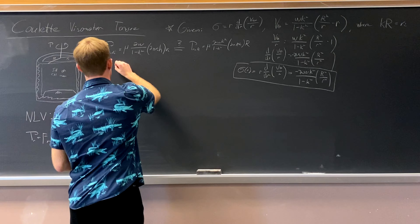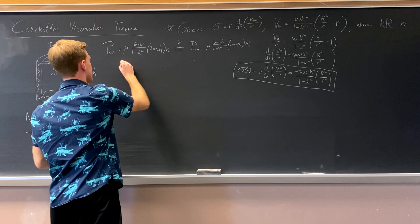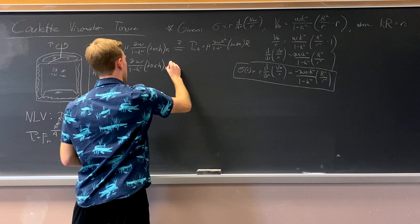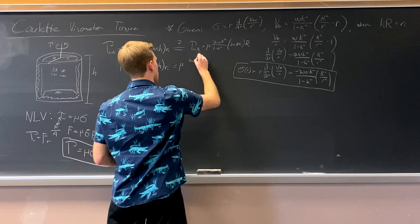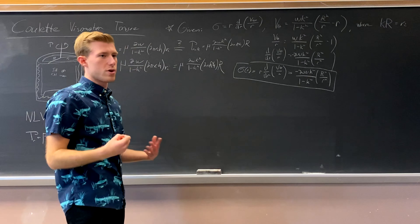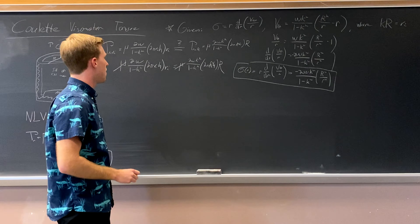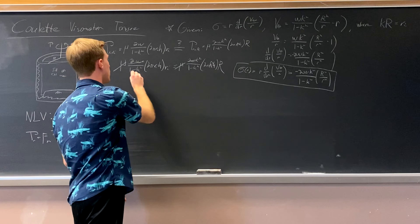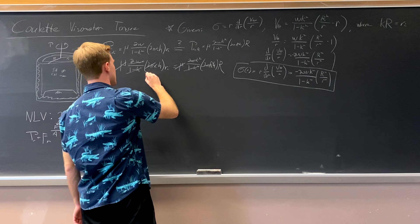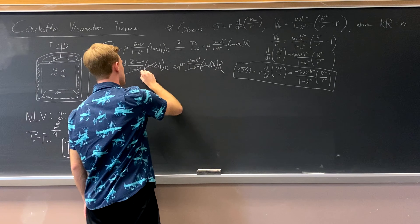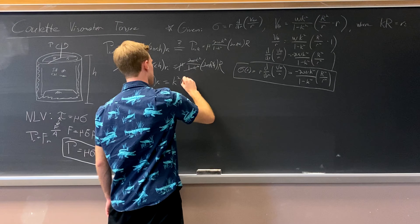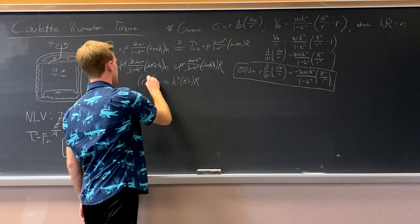Rewriting both sides: mu × 2ω/(1 − k²) × 2π r_i H × r_i equals mu × 2ω k²/(1 − k²) × 2π R H × R. The mu's cancel, the 2 omega's cancel, the (1 minus k squared) denominators cancel, 2 pi cancels, and H cancels. So we're left with r_i squared equals k squared times capital R squared.